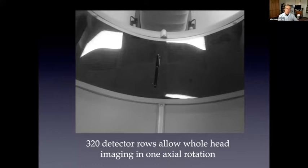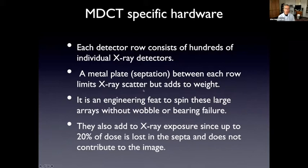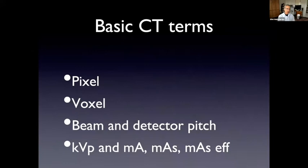But there's some disadvantages to this approach is that a metal plate is used between each row to limit scatter. And this plate or the septation adds weight to the array. So it becomes quite an engineering problem to spin these large arrays without any wobble or bearing failure, and also adds to the x-ray exposure, because up to about 20% of the dose is lost in the septations and doesn't contribute to the final image. So you may think that with modern scanners, we have substantially reduced dose, but in a sense, the opposite has occurred.